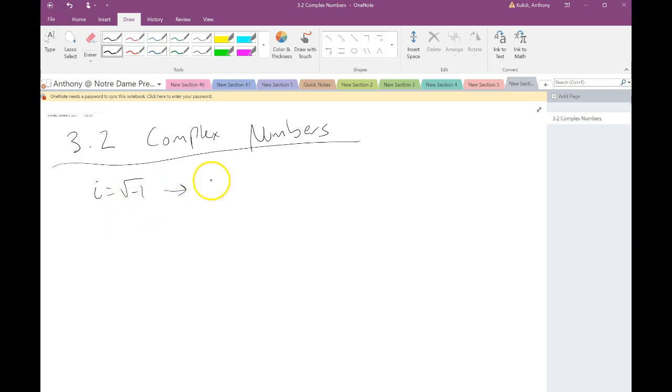And using this and the real numbers, we can extend that system into the set of complex numbers, which is anything that can be written in the form a plus bi.